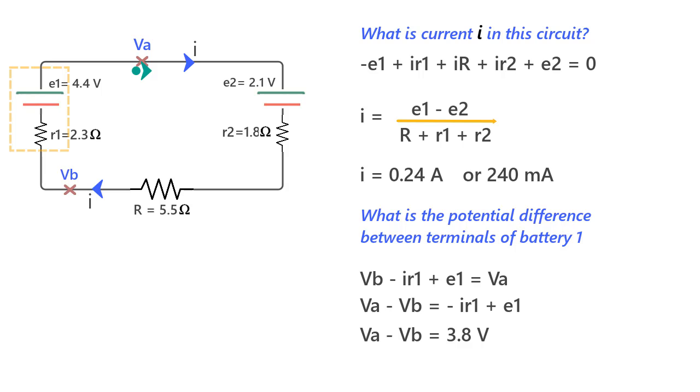Now you see, this is lower than the EMF of the battery, and the reason for it is that the internal resistance of the battery has caused a drop in the potential when current I passed through it. And if there was no internal resistance, the terminal potential difference would have been the same as the EMF, that is 4.4 volts.